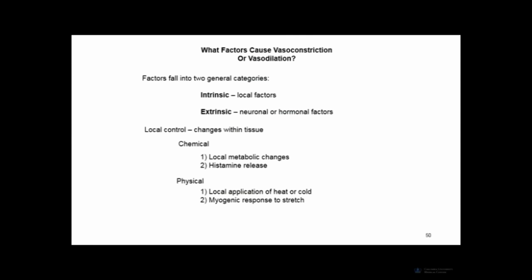What controls vasoconstriction and vasodilation? There are two general categories: intrinsic or local factors, and extrinsic factors (both neuronal and hormonal). Local changes include many physical factors such as temperature — heating an area generally causes dilation and increased blood flow, while cooling causes constriction and decreased blood flow.